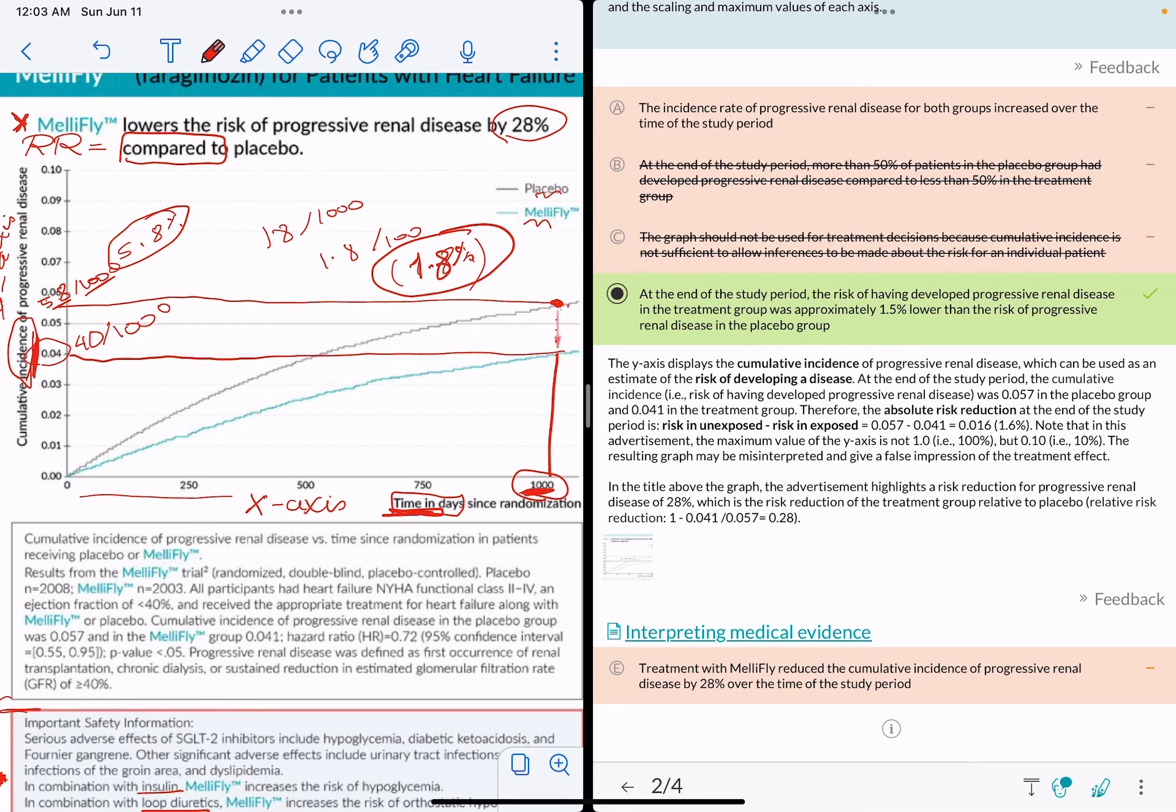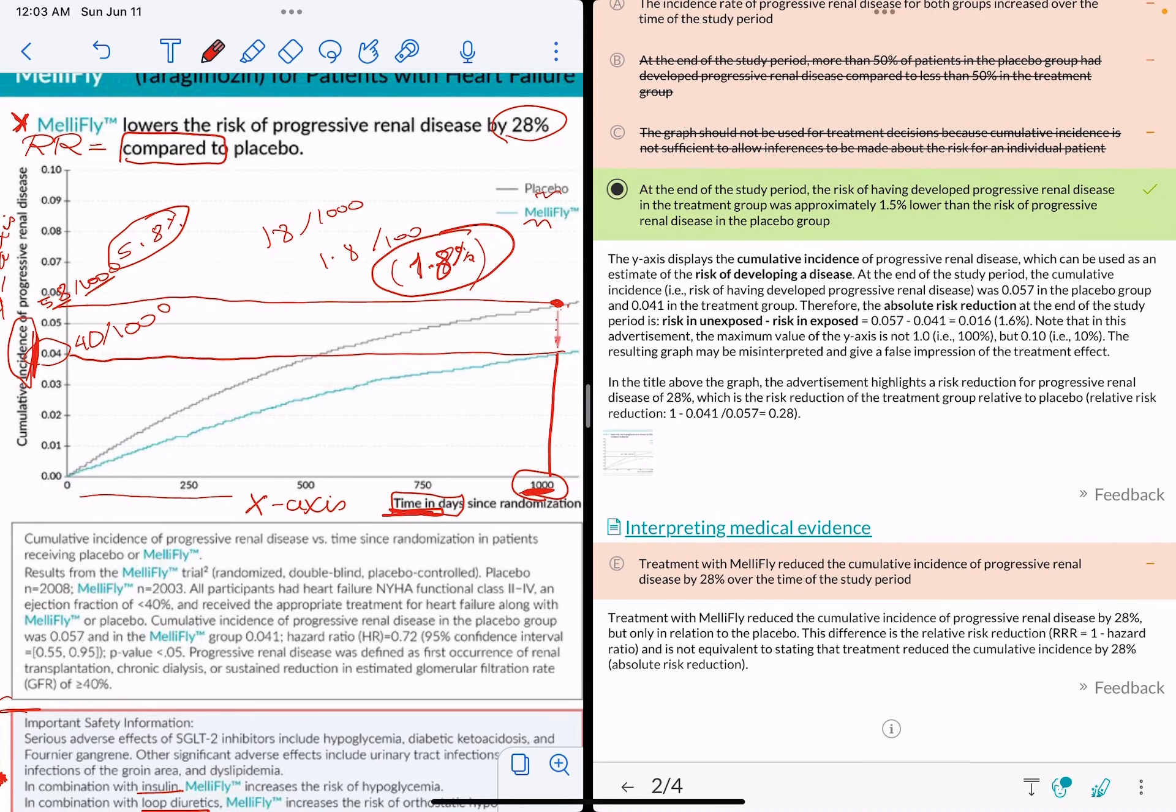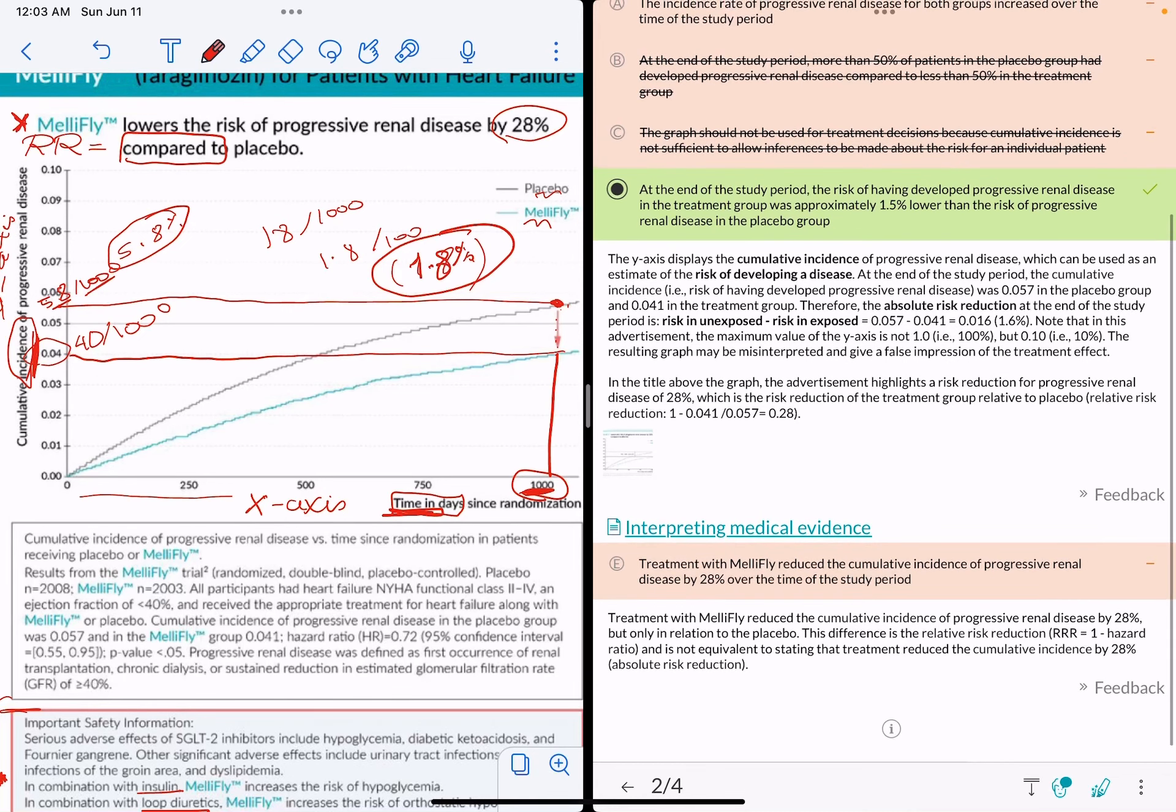Finally, answer choice E says treatment with MelliFly reduced cumulative incidence of progressive renal disease by 28% over the time of the study period. Did it actually reduce the absolute incidence alone? No, this is not the case.